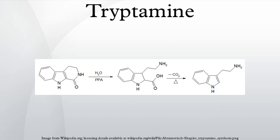The tryptamine chemical structure is the backbone for a group of compounds termed collectively substituted tryptamines. This group includes many biologically active compounds, including neurotransmitters and psychedelic drugs.